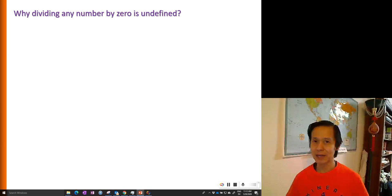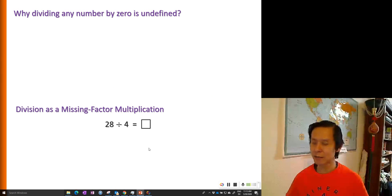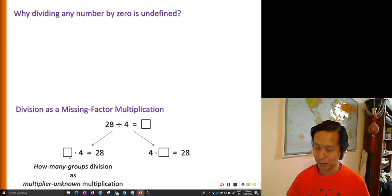So to explain this, let's revisit division as the inverse operation of multiplication. When we have a number like 28 divided by 4, we want to find out a missing factor. However, the missing factor could be a missing multiplier, or what we call multiplier unknown type of multiplication.